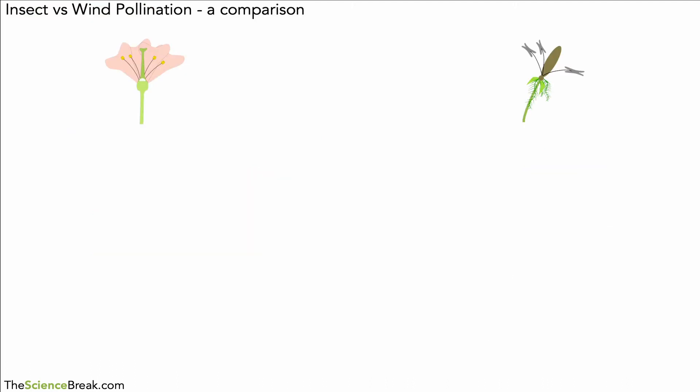So for the final part of this video, we can do a comparison of insect versus wind pollinated plants. So on the left hand side we have an insect pollinated plant, and on the right hand side we have a wind pollinated plant.